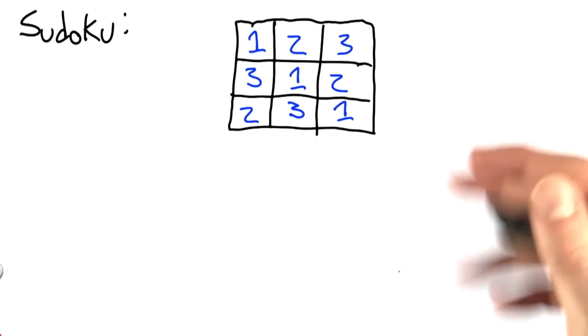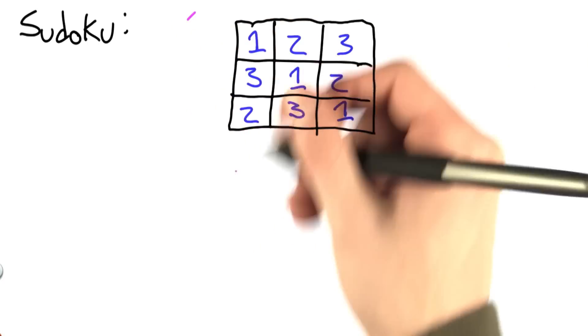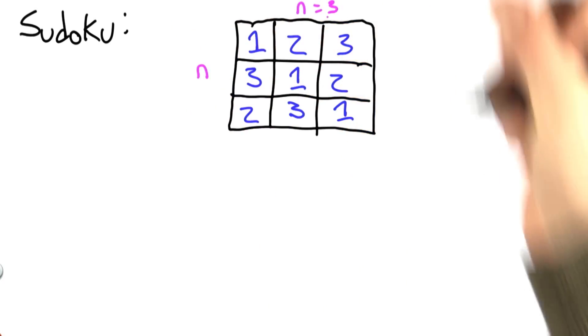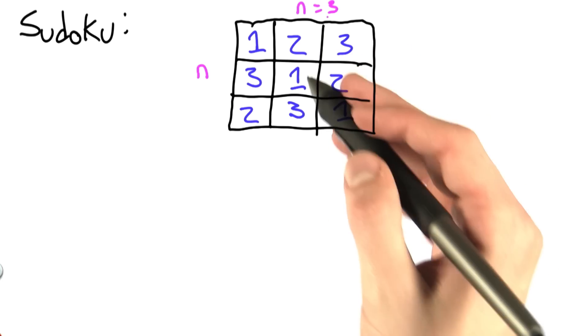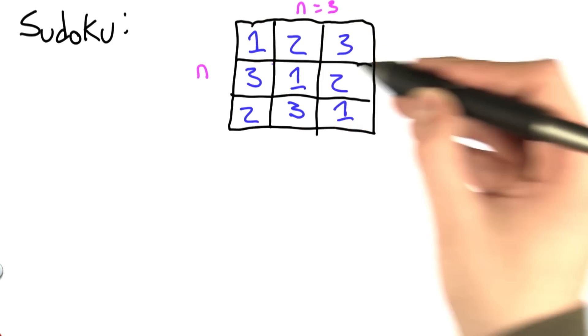In this problem, we've been asked to build a simplified Sudoku checker. In this version, we're given an n by n matrix. In this case, n equals 3, and we're going to ensure that every number appears once in every column and once in every row.